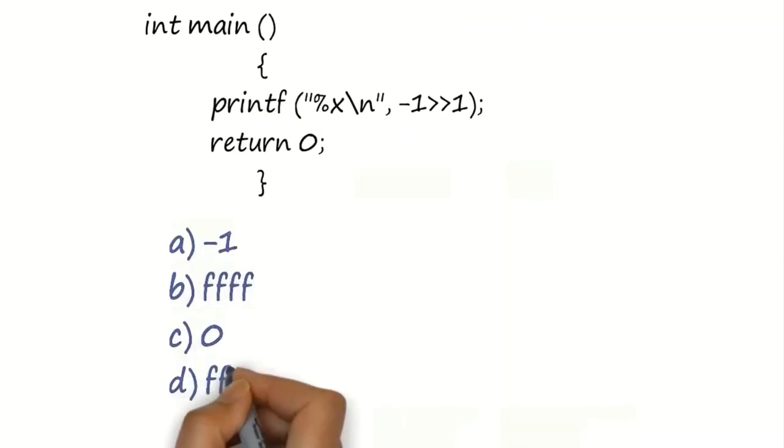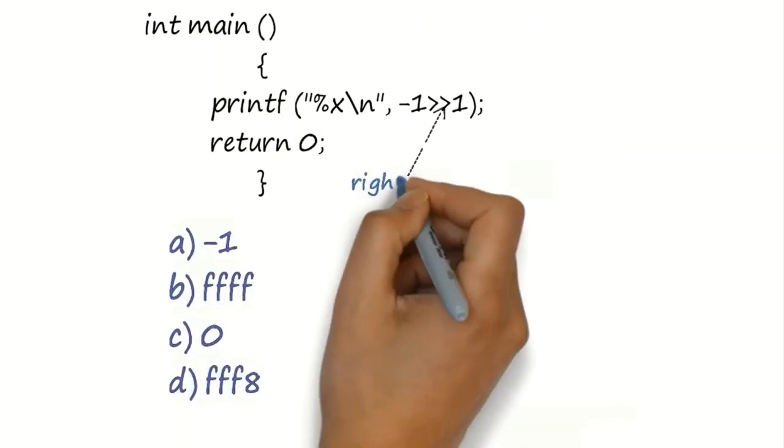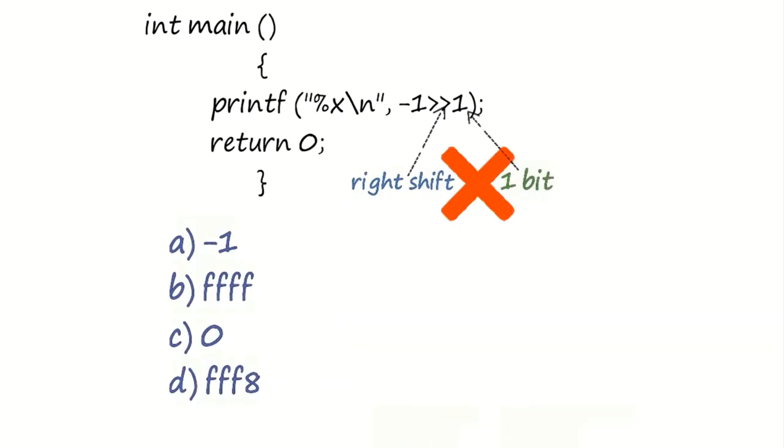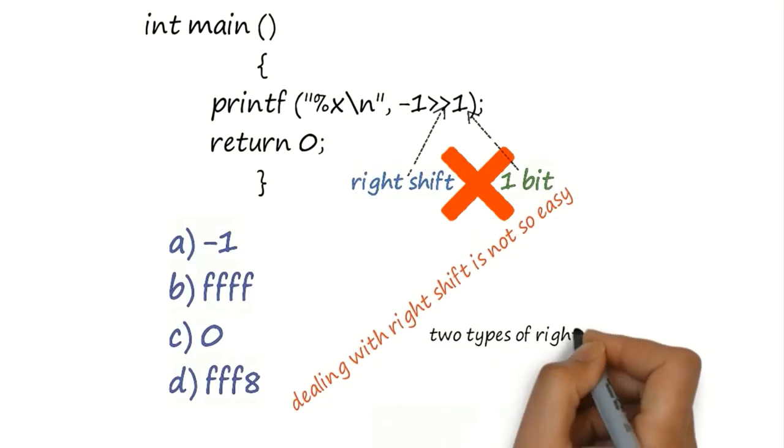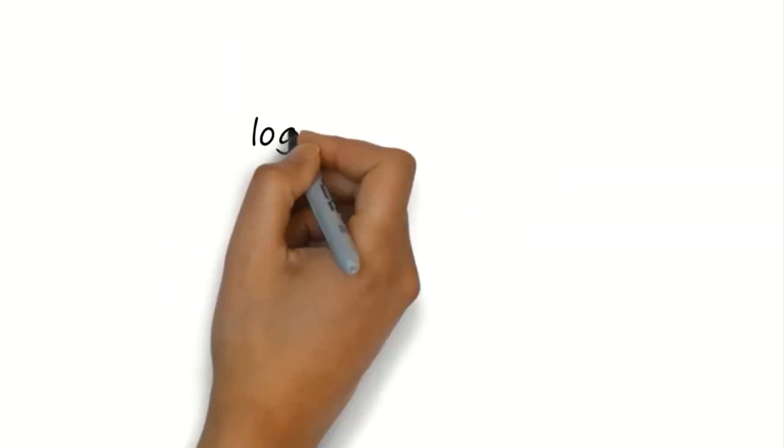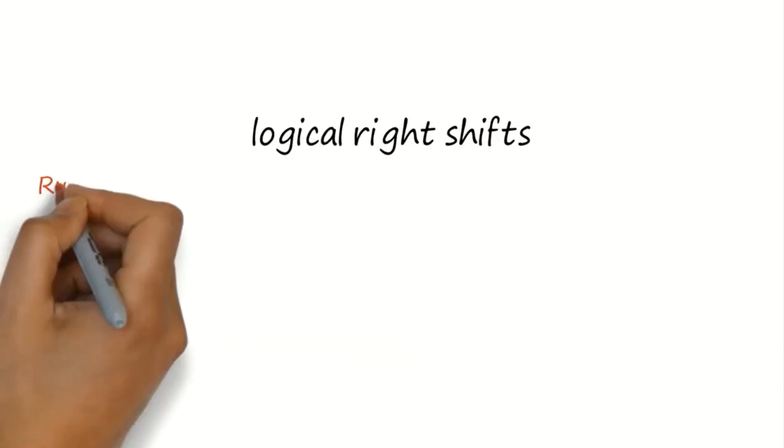In this problem, which seems like just a matter of right shift by 1 bit. However, this is not the actual case. Since dealing with right shift requires understanding logical right shift and arithmetic right shift. Let's understand logical right shift.